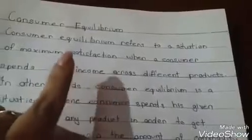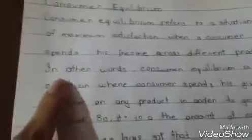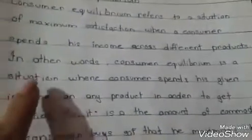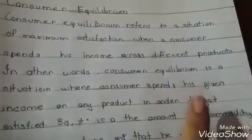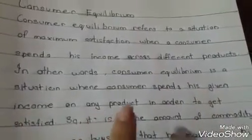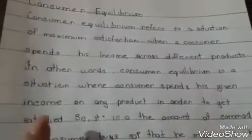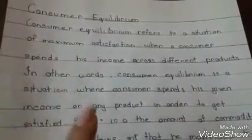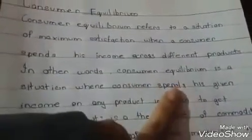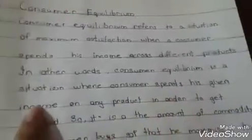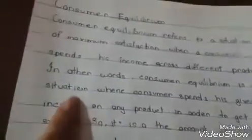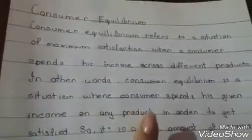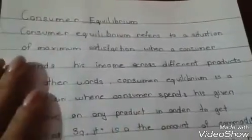Consumer equilibrium is when a consumer gets maximum satisfaction from purchasing a product by spending their entire income. In other words, consumer equilibrium is a situation where a consumer spends his given income on any product in order to get satisfied. It's about where the consumer spends their entire salary on a product and how much satisfaction they get from it.